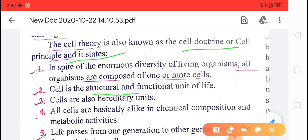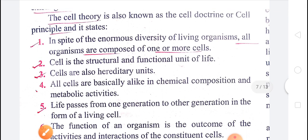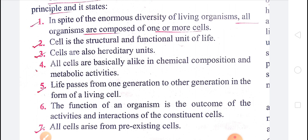Second, cell is the structural and functional unit of life. Third, cells also have hereditary units, because the nucleus found in the cell contains DNA that stores the hereditary characters. The chemical composition and metabolic activities also take place in the cell. Life passes from one generation to another in the form of living cells — the cells that arise from pre-existing cells.